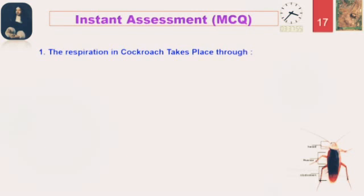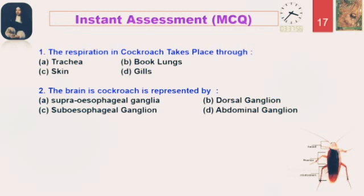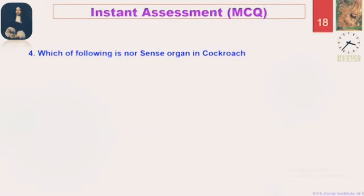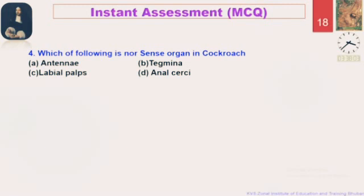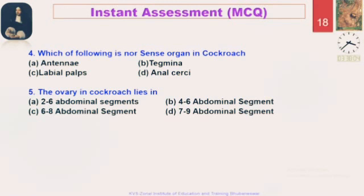It is time for some assessment. Question 1: Respiration in cockroach takes place through — trachea, book lungs, skin, or gills? Question 2: The brain in cockroach is represented by — supraoesophageal ganglion, dorsal ganglion, suboesophageal ganglion, or abdominal ganglion? Question 3: Which of the following represents external genitalia in cockroach — testes, gonapophysis, phallomere, or seminal vesicle? Question 4: Which of the following is NOT a sense organ in cockroach — antennae, tegmina, labial palp, or anal cerci? Question 5: The ovaries of cockroach lie in — 2nd to 6th abdominal segment, 4th to 6th, 6th to 8th, or 7th to 9th abdominal segment?